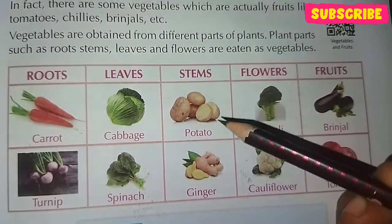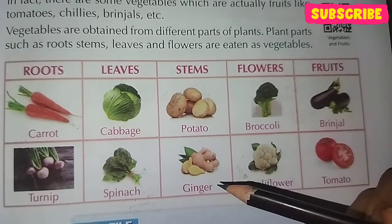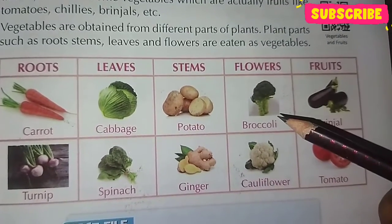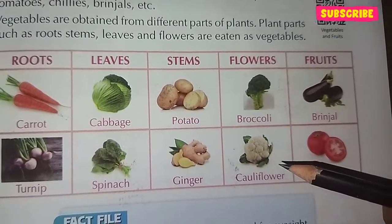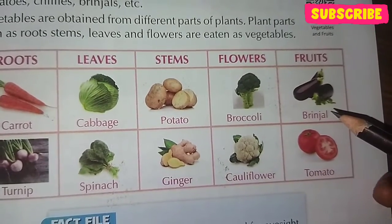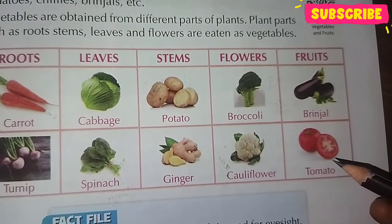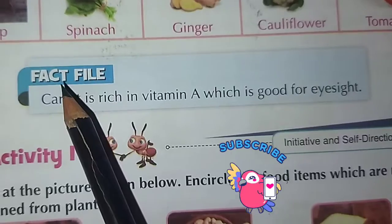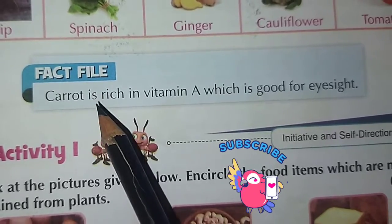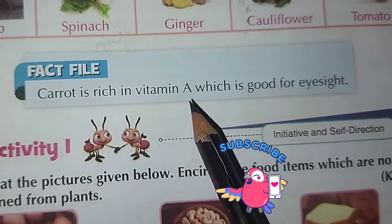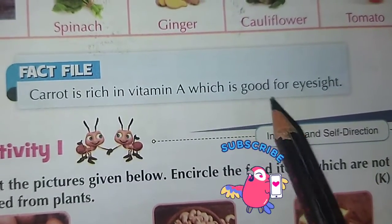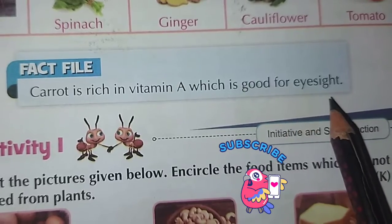Stem vegetables include potato and ginger. Flower vegetables include broccoli and cauliflower. Fruit vegetables include brinjal and tomato. Fun fact: carrot is rich in vitamin A, which is good for eyesight.